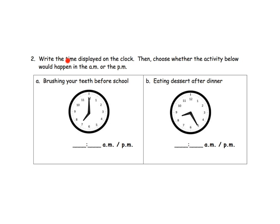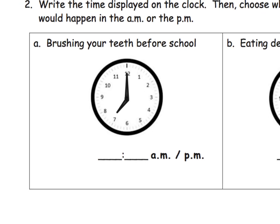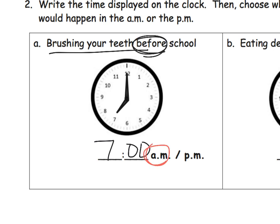Here it says: write the time displayed on the clock and then choose whether the activity would happen in the AM or the PM. We're going to look at that clock, and this clock really looks like it is saying seven o'clock exactly. If we are brushing your teeth before school, that makes this an AM activity — so that's 7 AM.